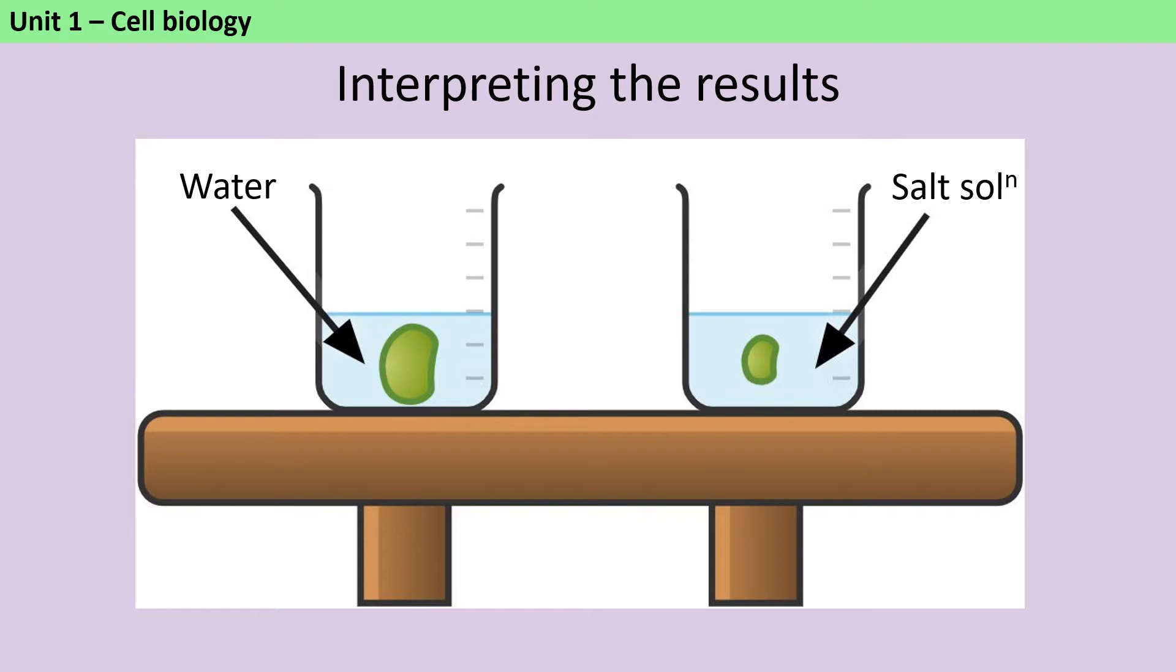In contrast to that, on the right-hand side, we've got a more concentrated solution outside of the vegetable. So the salt solution is more concentrated than the fluid that's inside the cells. And so what's happened is that the water that is in those cells has been moved out by osmosis to start diluting the salt solution. And so the cells of the vegetable have sort of shriveled up and become smaller, and the piece of vegetable matter will have also become lighter in mass.